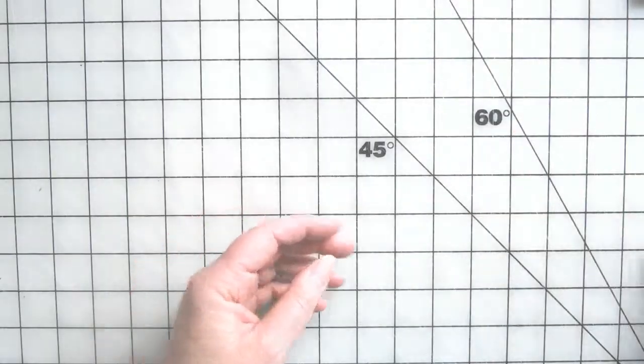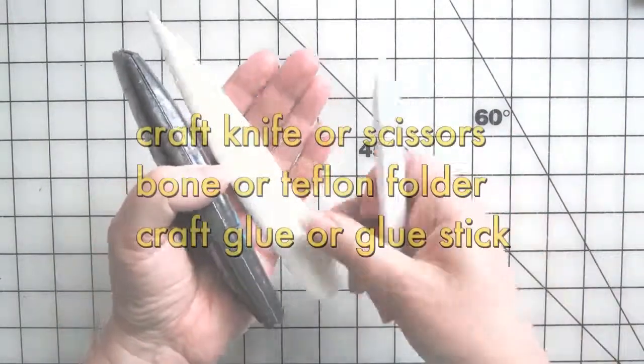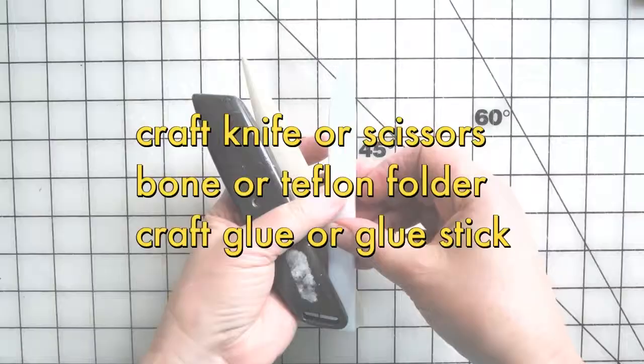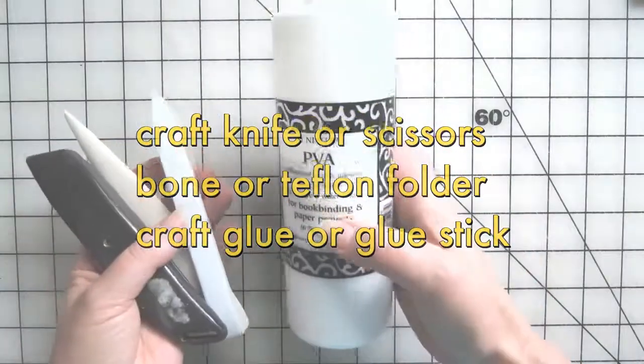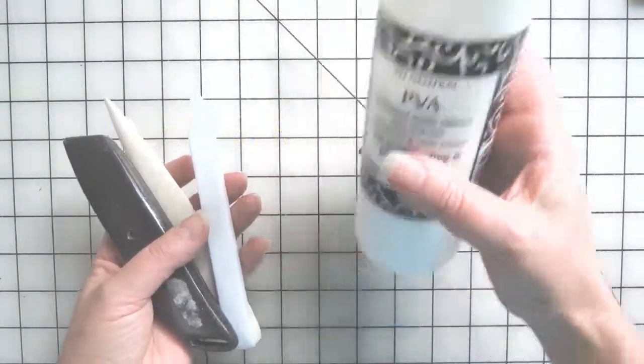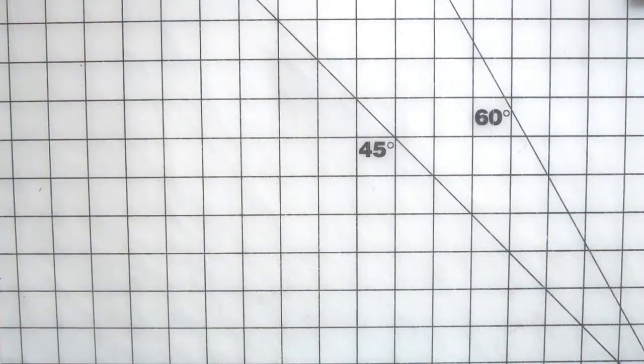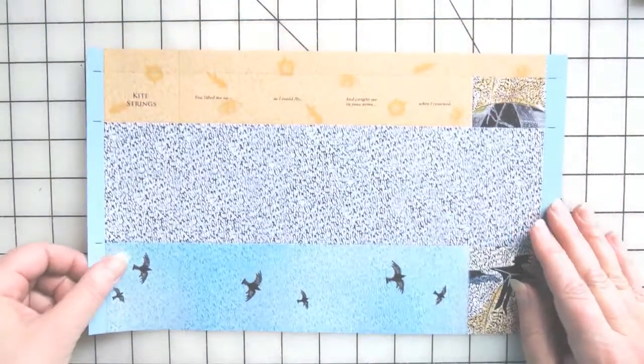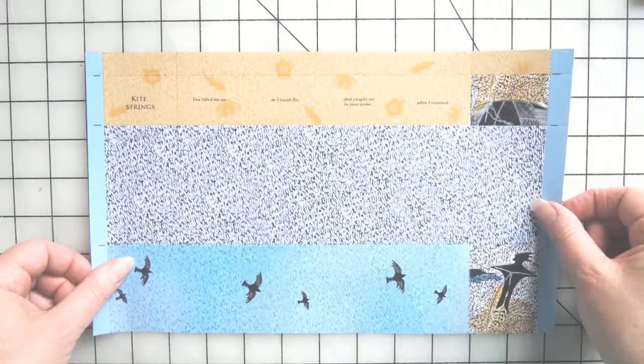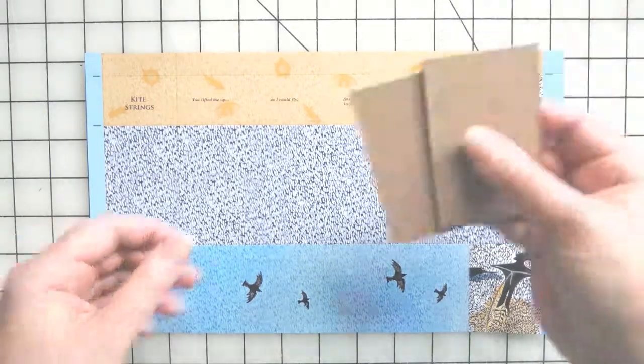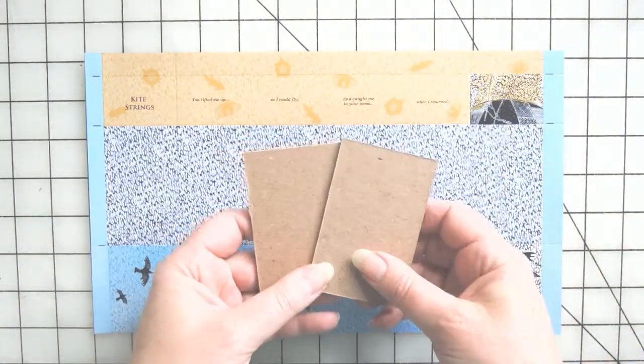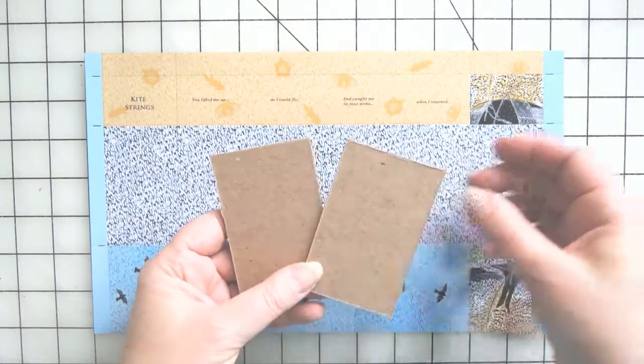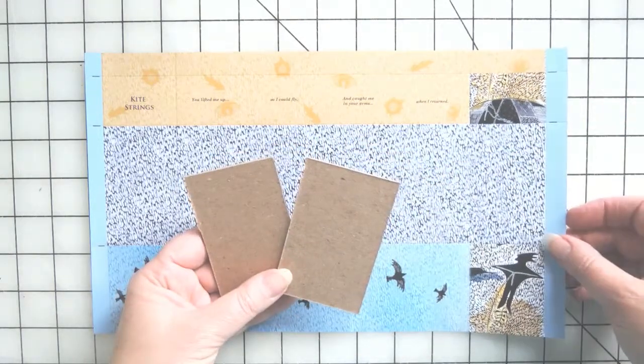You're going to need a few simple tools: something to cut with, a bone folder or a Teflon folder, your choice, something to glue the book cover to the book—I like to use PVA. You're going to need a piece of paper. I'm using the printout from the book that I just showed you, as well as two pieces of compressed board and something to cover those with. I'll put the measurements for both of these below.